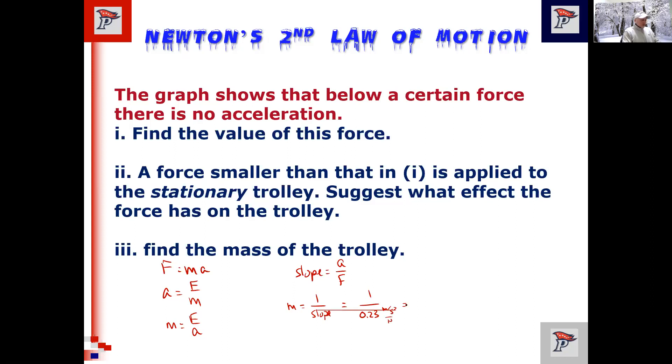0.23 meters per second squared per Newton. So if I take the inverse of 0.23, I get about 4.29. So 4.3, wow, this is getting worse and worse. And now I have newtons over meters per second squared, which is a kilogram, and so the mass is 4.3 kilograms.